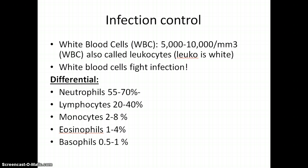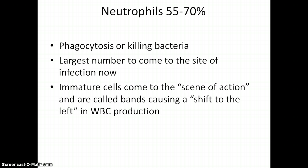In our unit for infection control, we'll be looking at the white blood cells and a normal is 5,000 to 10,000. Leuco means white in medical terminology so leukocytes are your white blood cells that help fight infection. A differential tells about the different components or subunits of your white blood cell count. The neutrophils are in the greatest amount and they come to the scene of action when there is an infection, so when neutrophils are above 70% we know it's a new bacterial infection.